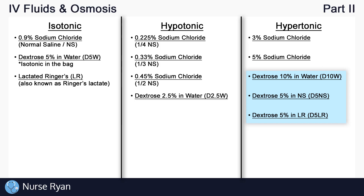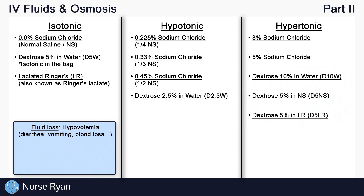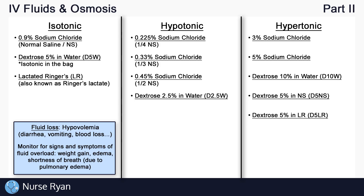Let's review the different uses of these IV fluids. Why would someone need an isotonic solution? The main reason is fluid loss, like in a hypovolemic state. Isotonic solutions are used to replace fluid without the risk of changing the intracellular volume. So they can be used in patients with diarrhea, vomiting, or blood loss. We do however have to monitor closely for signs of fluid overload, which may present as rapid weight gain, edema or swelling, and shortness of breath due to pulmonary edema.